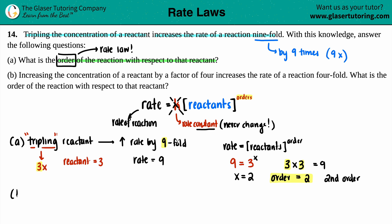Now we do the whole thing again for letter B. For letter B, it says if we're increasing the concentration of a reactant by a factor of four, it increases the rate of reaction fourfold. What is the order of the reaction with respect to that reactant? For the reactant, we are increasing by a factor of four.